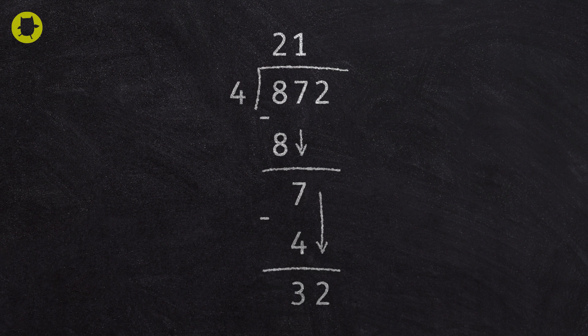Finally, we ask, how many groups of 4 are there in 32? The answer is 8, so we write the 8 above the 2.